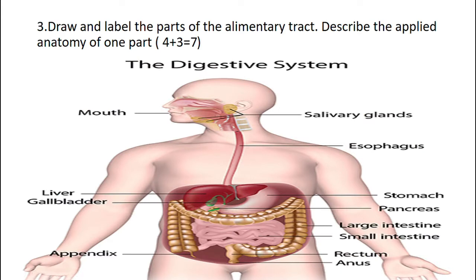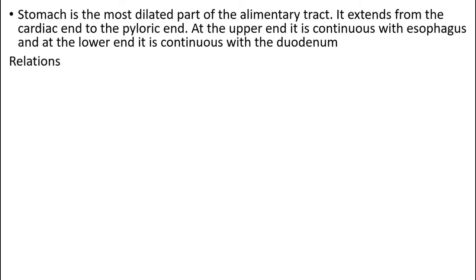The third question is a repetition of a previous question paper. The previous question asks to draw and label the parts of the alimentary tract and describe the applied anatomy of any one part. This question has been repeated many times and has been explained many times, but will be explained again. This is the picture of an alimentary tract and we can see the stomach in detail.